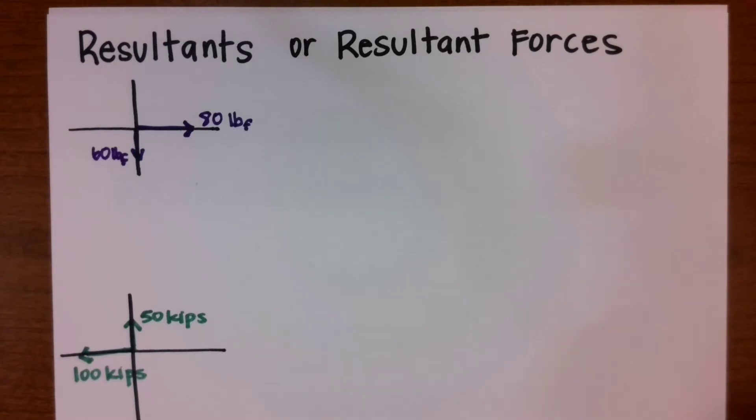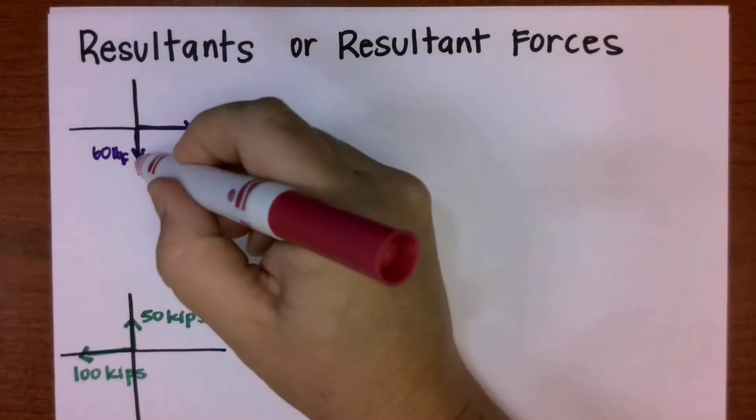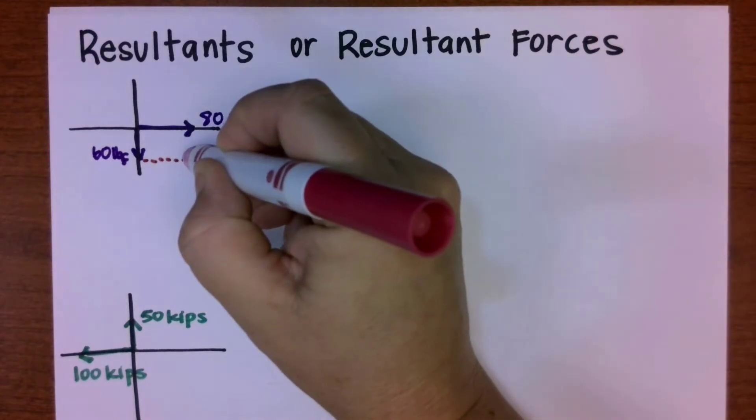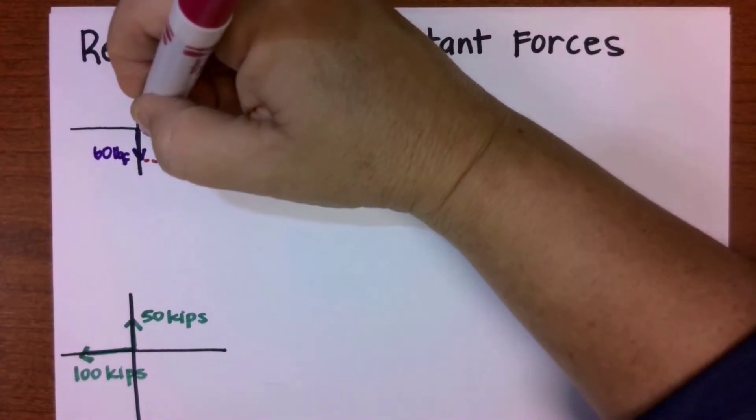Okay, so we're going to look at how to calculate a resultant force. When we start right here, I have these two forces at right angles, one's an x and one's a y.